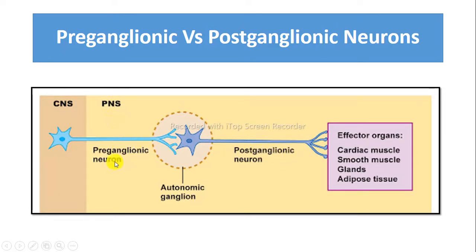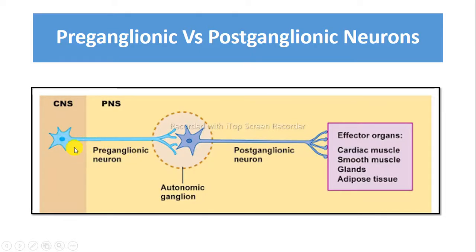These preganglionic neurons arise from the central nervous system, whereas postganglionic neurons arise from the autonomic ganglion. Preganglionic neurons supply to the autonomic ganglia, whereas postganglionic neurons supply to the effector organs. Cell bodies of preganglionic neurons are located in the brain or spinal cord, whereas cell bodies of postganglionic neurons are located in the ganglion.